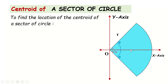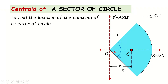So we get the centroid lying on the x-axis. Since it lies on the x-axis, the y-coordinate of the centroid is 0. It will have some x-coordinate while the y-coordinate equals 0. So we only need to find the x-coordinate of the centroid, which we call x-bar.